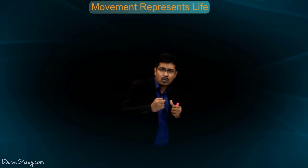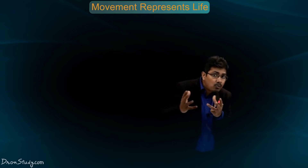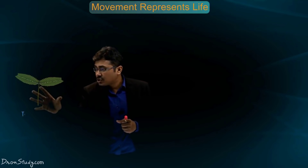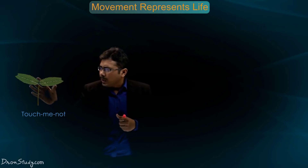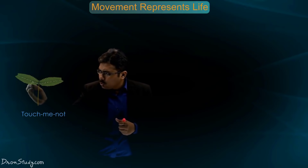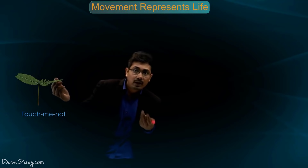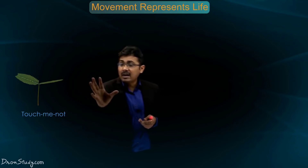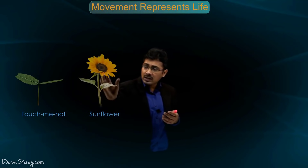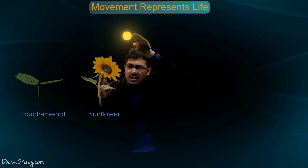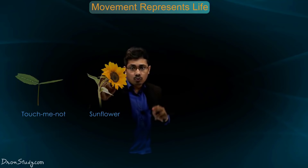Acha students, aap yeh batao - jo plants hote hain, woh bhi toh living beings kehlate hain, yaani unke paas bhi life hai. Toh kya woh bhi move karte hain? Students, woh bhi move karte hain. Jaise is plant ko dekho students - isko touch-me-not bolte hain. Aapne dekha hoga aaise plants ko. Normally leaves ka position aisa hota hai, lekin agar koi isko touch kare, toh fall ho jaata hai students. Toh movement hua na. Plants can also move students. Phir aap dekho sunflower - sunflower aapne suna hoga. Uska jo flower hota hai, woh apna orientation din ke time change karta hai. Jaise sun apni position change karta hai, woh bhi apna orientation change karta hai students. Toh wahan bhi movement ho rahi hai students.